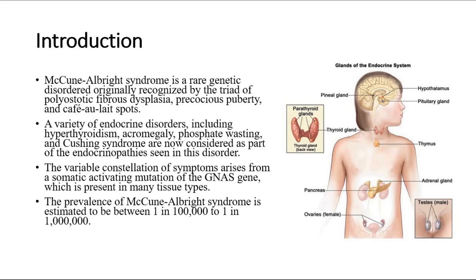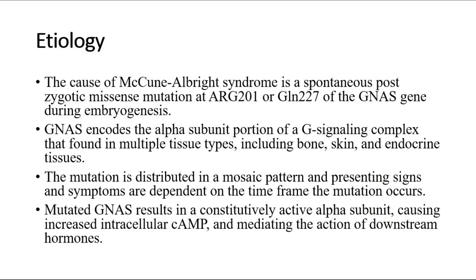The variable constellation of symptoms arises from a somatic activating mutation of the GNAS gene, which is present in many tissue types. The prevalence of McCune-Albright syndrome is estimated to be between 1 in 100,000 to 1 in a million. The cause is a spontaneous post-zygotic missense mutation at ARG201 or GLN227 of the GNAS gene during embryogenesis.